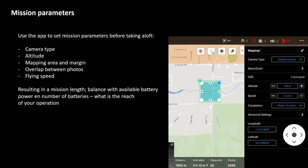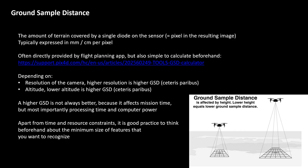Another aspect automatically calculated in the flight planning app is GSD — the ground sample distance. You can see here that it results in a ground sample distance of 2.4 centimeters per pixel, determined by the Mavic zoom lens resolution and the altitude. The ground sample distance is the amount of terrain covered by a single diode on the sensor — which is a pixel in the resulting image — and it's typically expressed in millimeters or centimeters per pixel.